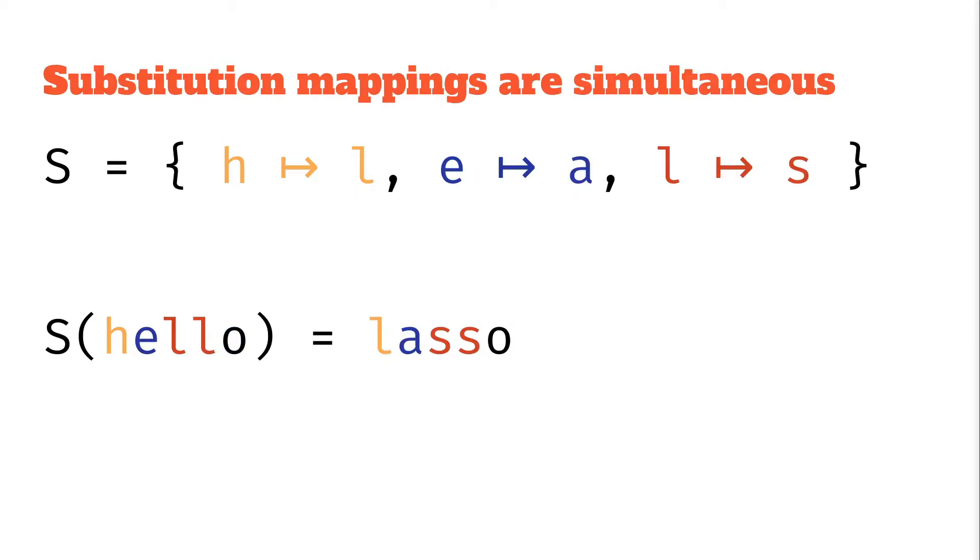Another thing to note is that second part of the definition. Substitution mappings are simultaneous. So if we apply this substitution, the H goes to L, the E goes to A, the L goes to S, and we get lasso.